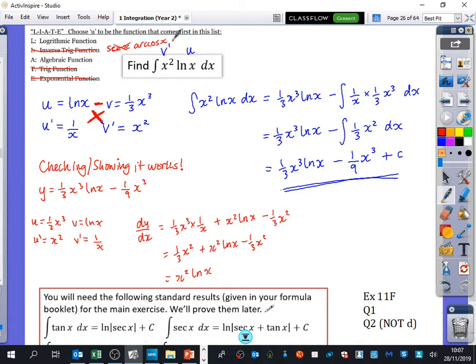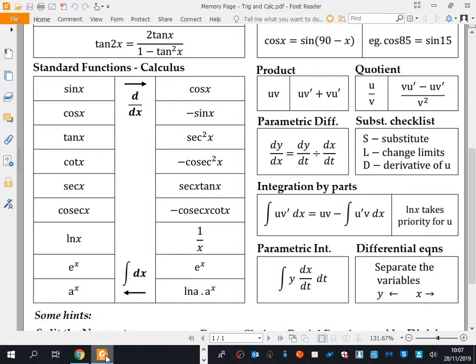I just thought it was worth pointing out. On your memory page that I have got for you guys that I had made, you've got integration by parts. The only thing that you need to memorize is ln x takes priority for you. That's the thing that you need to take from this. As soon as there is an ln x in there, make that thing u, and the rest should all work out.